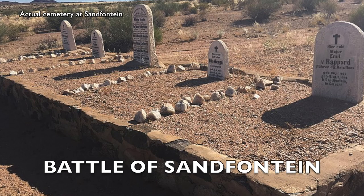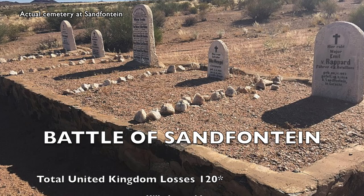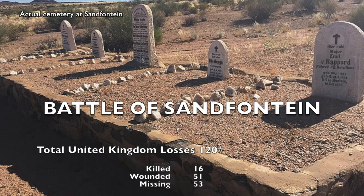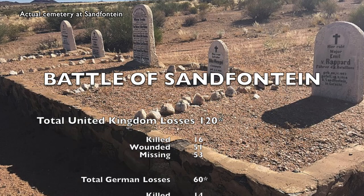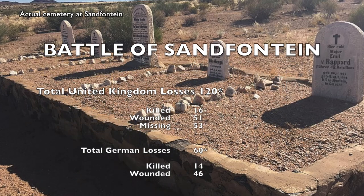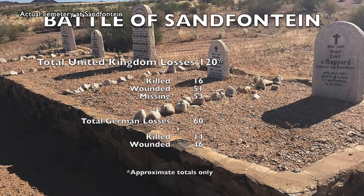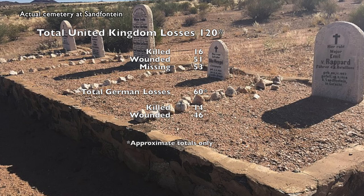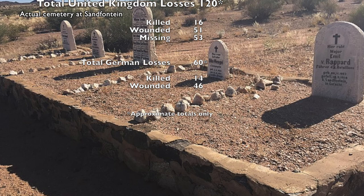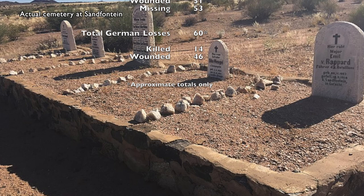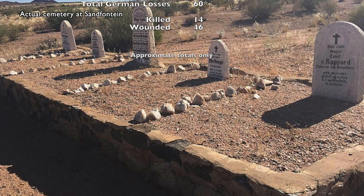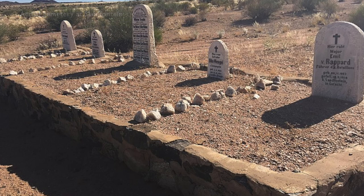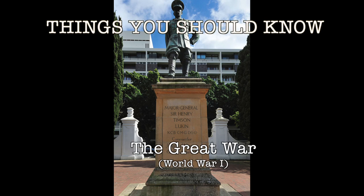Casualties were hard for the British forces as they lost the entire 120-man garrison, with 16 killed, 51 wounded, and 53 captured. The Germans lost 60 men, consisting of 14 killed and 46 wounded. Join us again next time on Things You Should Know: The Great War.